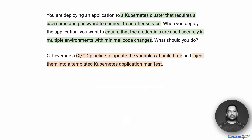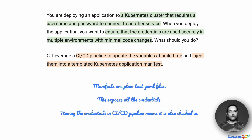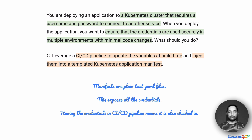Option B suggests that we leverage a CI/CD pipeline to update the variables at build time and inject them into a templated Kubernetes application manifest. What is an application manifest for Kubernetes? They are plaintext YAML files. If they are plaintext, these credentials are going to be exposed again. So anything plaintext is ruled out as an option.